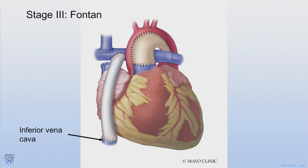The last stage is the Fontan. This procedure is generally done between two and four years of age. In this procedure, the lower body blood is now connected to the lungs so that all the blood return of the child goes directly to the lungs without the assistance of a pumping chamber or ventricle. This passive blood flow requires the lungs to be good with low resistance. The Fontan operation is also lower risk than stage one and has a shorter recovery, although fluid on the lungs can prolong the hospital stay to some degree. Many surgeons will put a hole or fenestration in the Fontan, allowing a small amount of blue blood to pass into the ventricle and out the aorta. Therefore, these patients usually have slightly decreased saturations and are slightly blue.